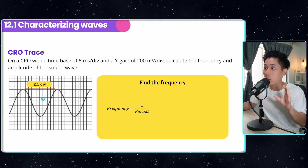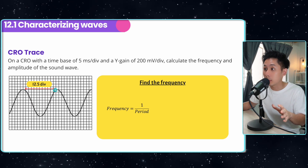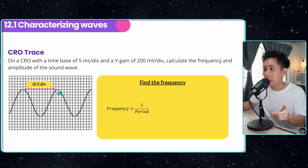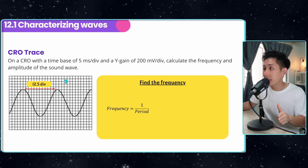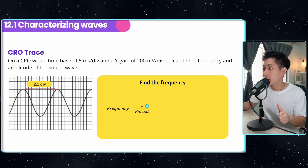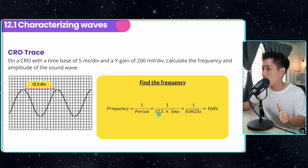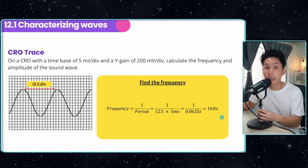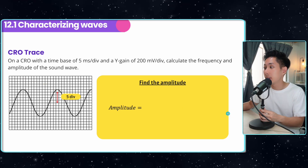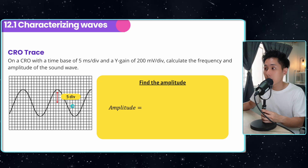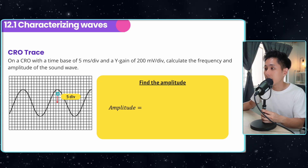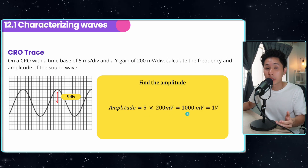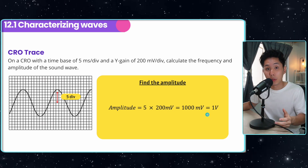We know that frequency can be calculated using one over period, and period is the amount of time for one complete wave to pass through. From this graph, one complete wave spans 12.5 divs, and one div equals 5 milliseconds on the time base. So the period is 12.5 multiplied by 5, and the frequency works out to 16 hertz. For the amplitude, we pick the centre of the graph, count the divs from centre to peak — which is 5 — and multiply by 200 millivolts per div, giving 1000 millivolts, which equals 1 volt.